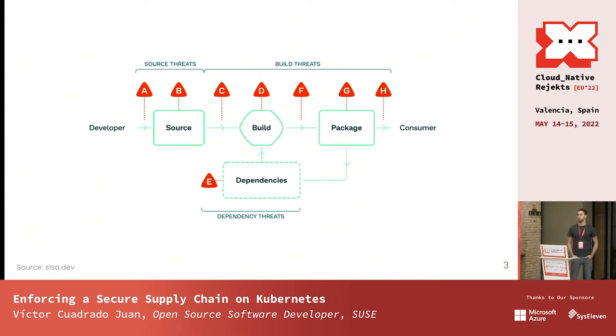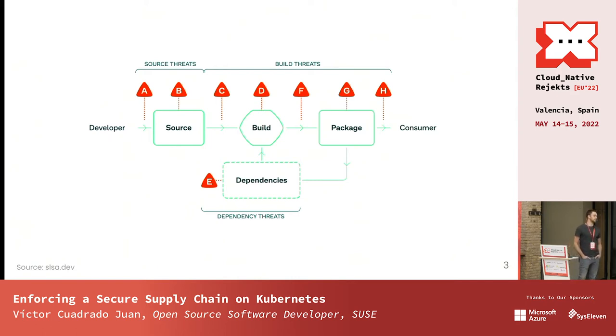Also, the container is going to have dependencies — it's going to have container layers, libraries, and so on. So for those dependencies, we need a place to build it and we need the source code.